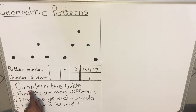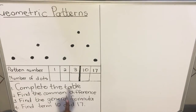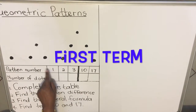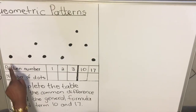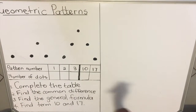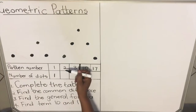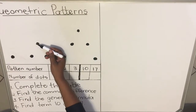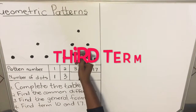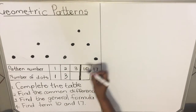In the first question, we must complete the table. In the first term, we have one dot. In the second term, we count one, two, three — that's three dots. In the third term, we count one, two, three, four, five — that's five dots.